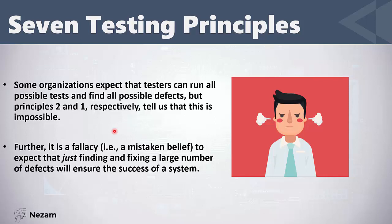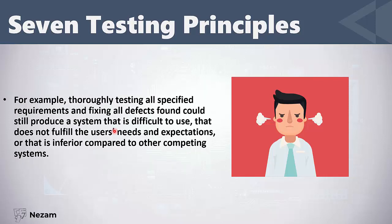Another fallacy is expecting that finding and fixing a large number of defects will ensure system success. Even if you test requirements and fix all found defects, your system can still be difficult to use, might not fulfill users' needs and expectations, or may be inferior compared to competing systems. For example, if you build a new social media app, review the requirements, test the software, and release it — no one may use it simply because Facebook already exists. You need to work more on quality.